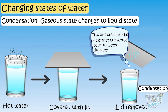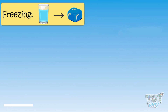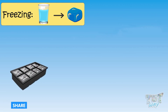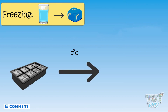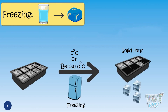Now let's see how the liquid form of water changes to a solid form. When water is cooled down to a certain temperature, like zero degrees or even below, water changes to a solid form, and this process is called freezing.